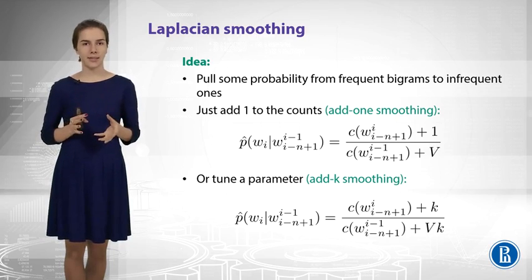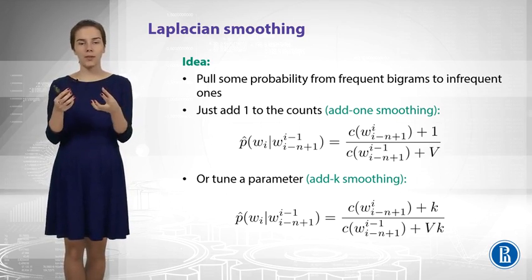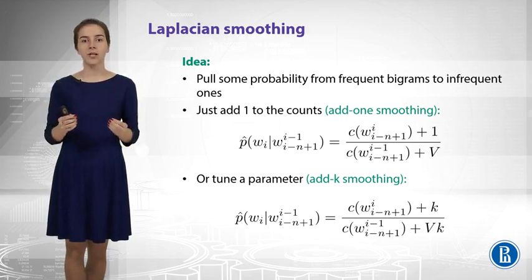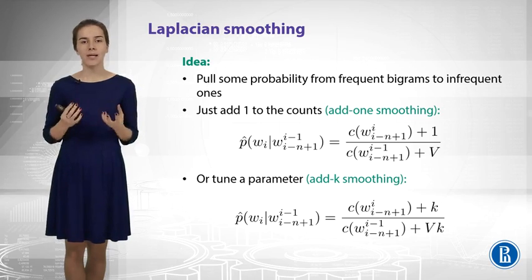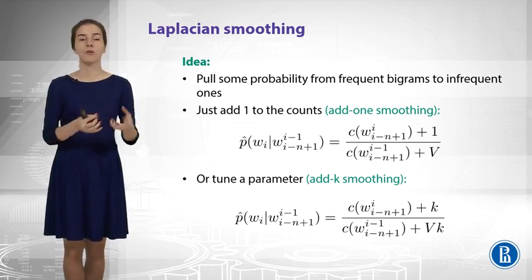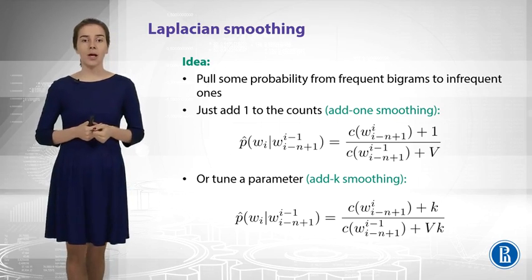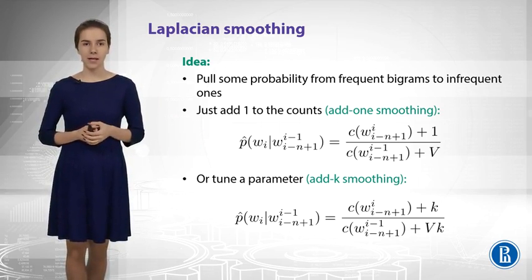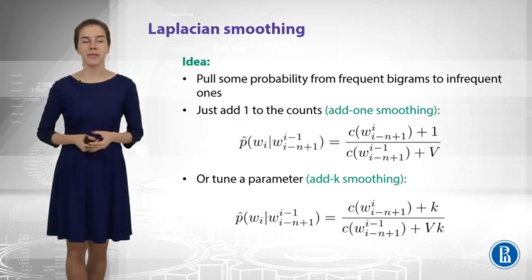So, what have we just done? The idea is very simple: we need to somehow pull the probability mass from the frequent n-grams to infrequent ones. This is actually the core idea behind all smoothing techniques. In the rest of the video, we will discover the best way to do this. One rather simple approach is to add not one, but some k, and we can tune this constant using our test data — this is called add-k smoothing. All these approaches are sometimes called Laplacian smoothing, which is maybe the easiest and most popular smoothing.